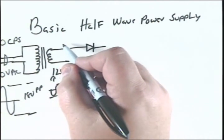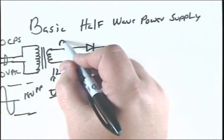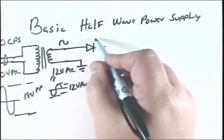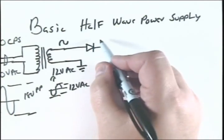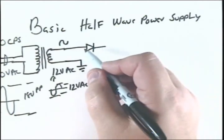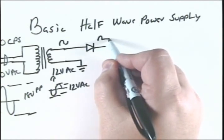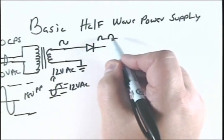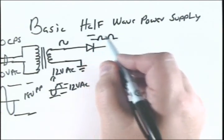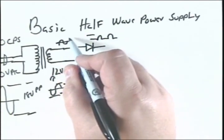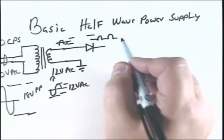Now at this point, we have AC here. But after the diode, since the diode only allows electrons to flow one direction, what we have is only DC. It's pulsating DC, but it's just DC.